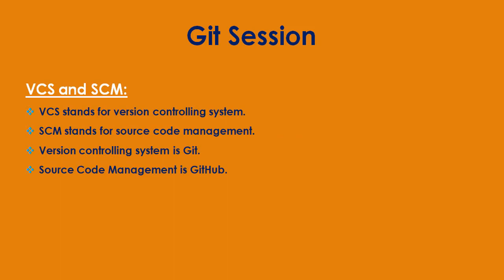VCS stands for version controlling system and SCM stands for source code management. Version controlling system is Git, and source code management refers to GitHub.